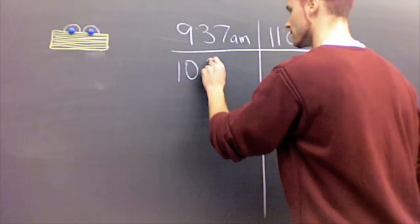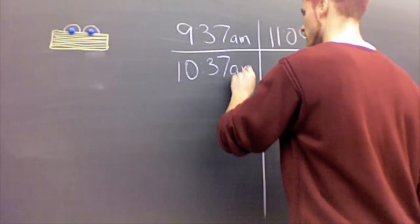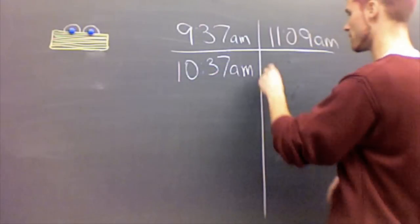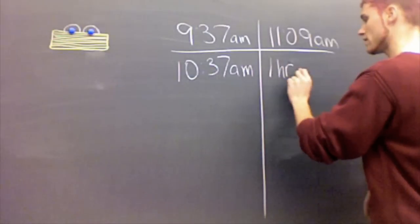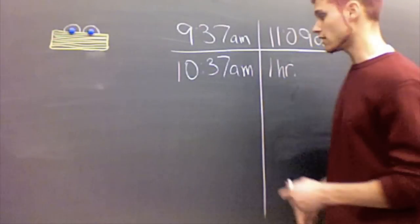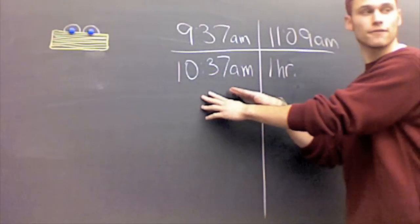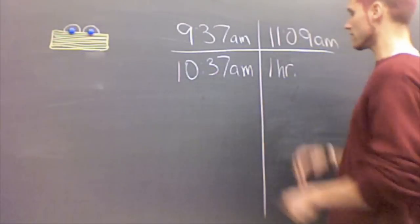And then over here, I'm going to bank an hour because of that, or I'm going to bank one hour. That means we just went one hour so far, alright? Banked. Yeah, banked, because we went one hour. Now I only have to count from 10:37.